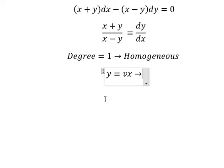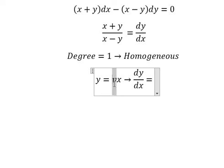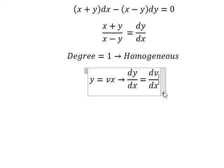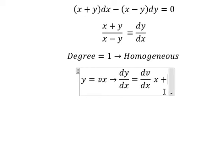After that, we differentiate both sides. First, the differential of v gives us dv/dx times x, plus the differential of x gives us v.